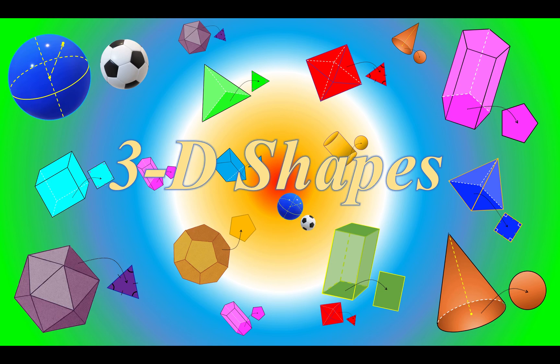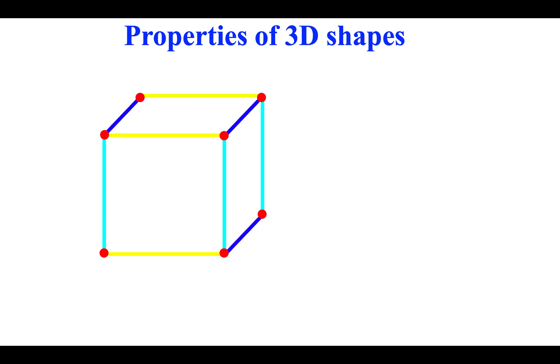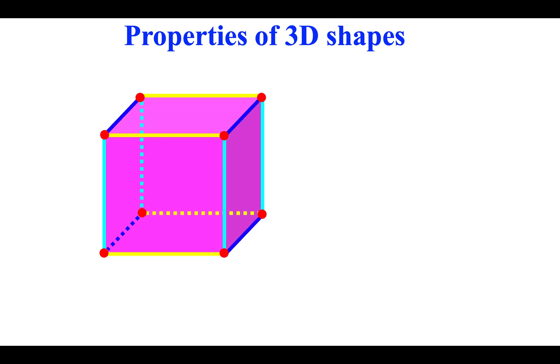Hello, welcome back to Nova Kids Quest. Today, we're going to learn about 3D shapes and their properties. We are looking at a drawing of a cube. A cube is a typical example of a 3D shape.